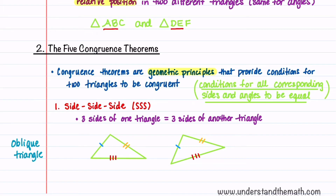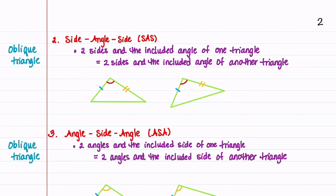Our first congruence theorem is called side-side-side. Three sides of one triangle are equal to the three sides of another triangle. Our sides in blue are equal, our sides in orange are equal, and our sides in red are equal.